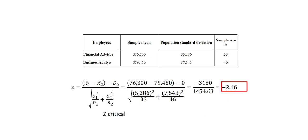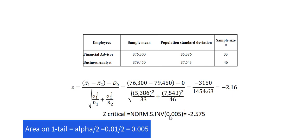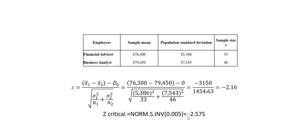Next, we find the critical value by typing this formula right here into any cell in Excel. Alpha is 0.01 since it is a two-tailed test. The area on one tail will be alpha divided by 2, which will be 0.005. Once we type this into Excel, it returns the critical value, negative 2.575.